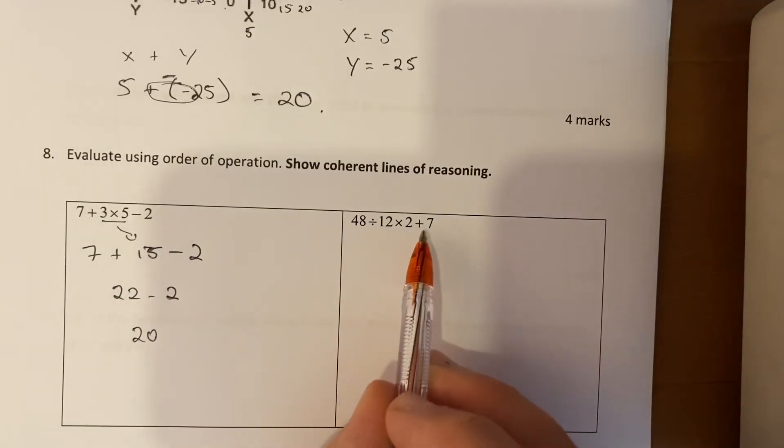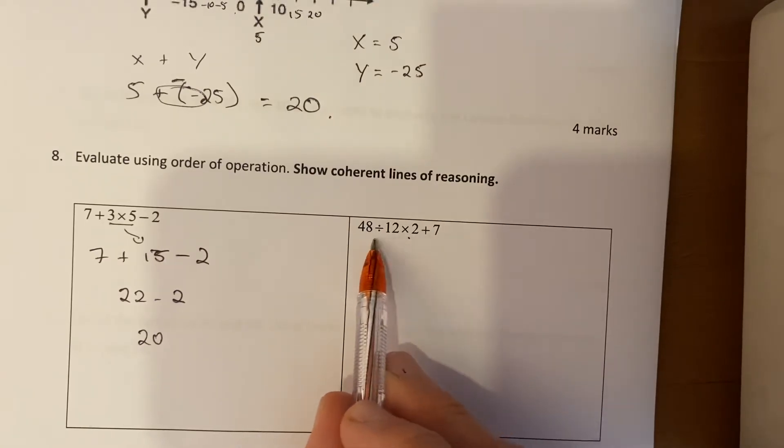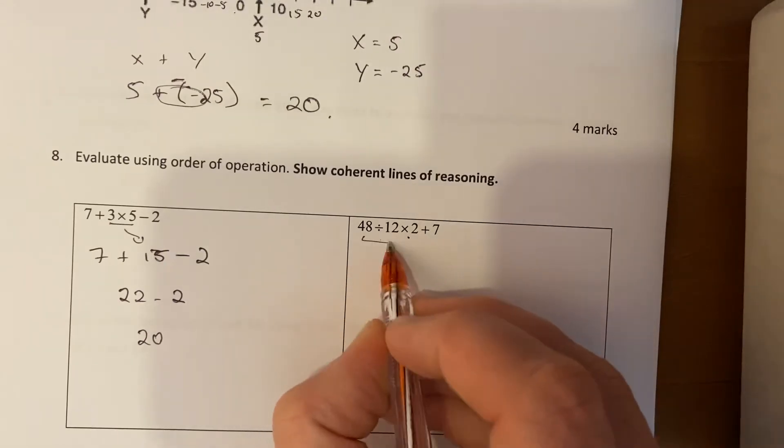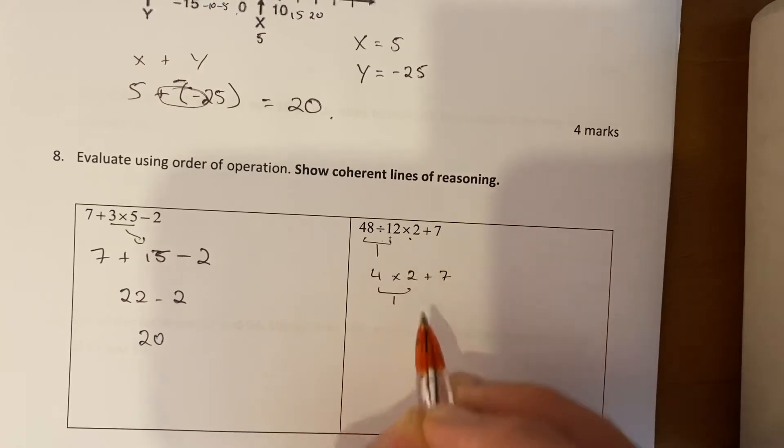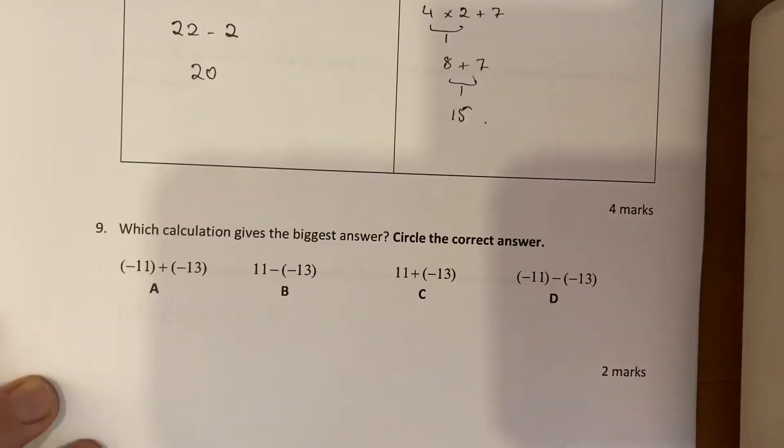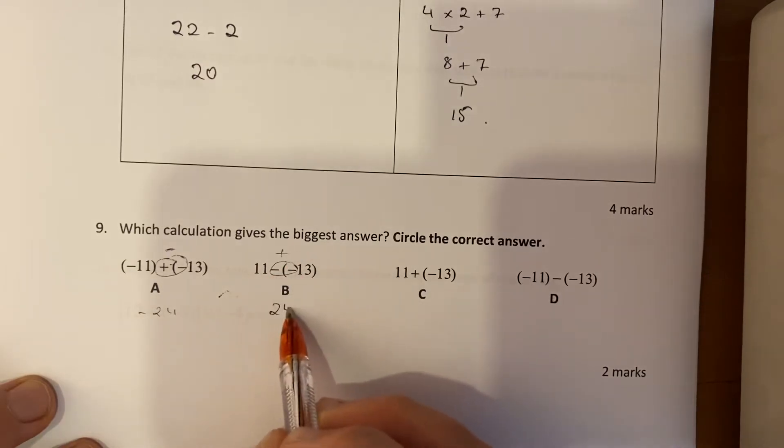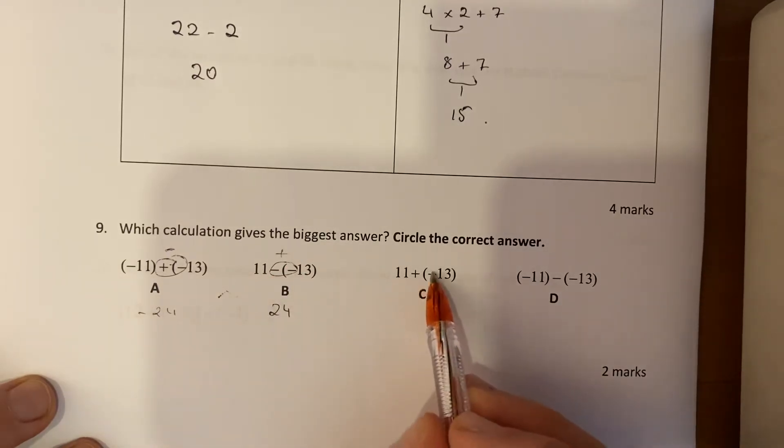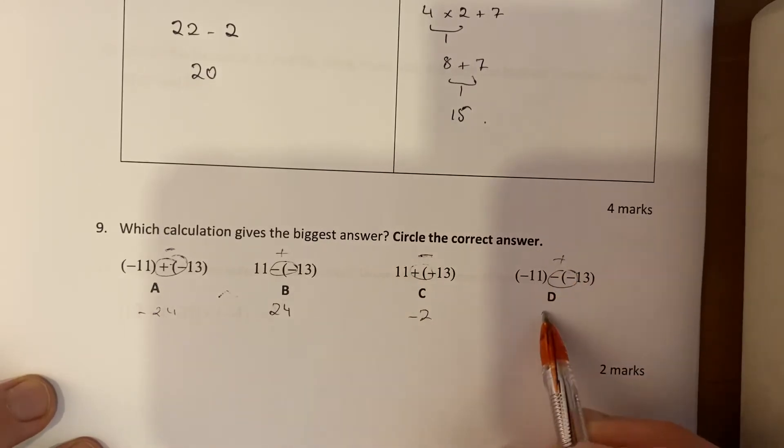Next one: well I've got division, multiplication, and addition. Division and multiplication have to come first, and whichever comes left to right first. So this needs to be done first - 48 divided by 12 is 4, then 4 times 2 next is 8, and then I add 8 and 7 finally which is 15. Which calculation gives the biggest answer? Well I can work all these out. That's going to give a minus, so that's minus 24 - that's small. That's going to give a plus, that's plus 24 - so that's quite big. This is going to be subtracting, that's not good, that's minus 2. That's going to be adding but it only gives plus 2. So B with an answer of 24.